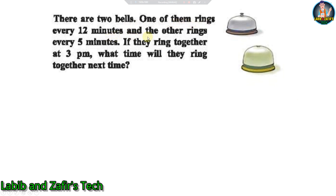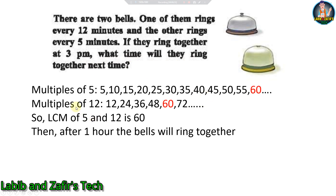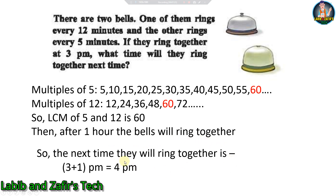Next problem: There are two bells — one rings every 12 minutes and the other every 5 minutes. If they ring together at 3 PM, what time will they ring together next? This is an LCM problem. Multiples of 5: 5, 10, 15, 20, 25... 60. Multiples of 12: 12, 24, 36, 48, 60. The LCM of 5 and 12 is 60, so after 60 minutes (one hour) the bells ring together again — at 4 PM.